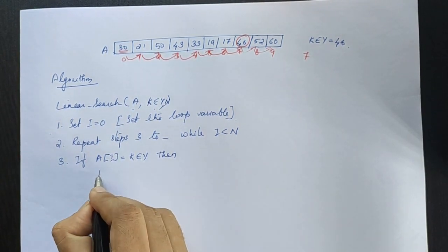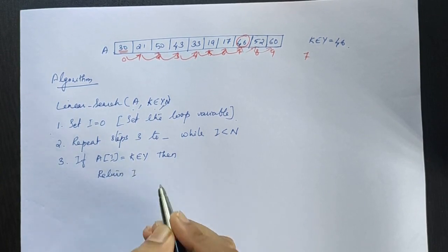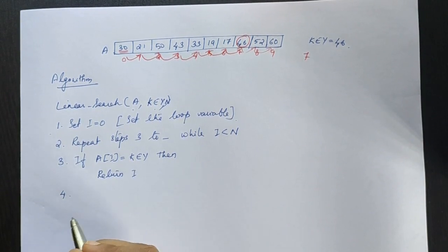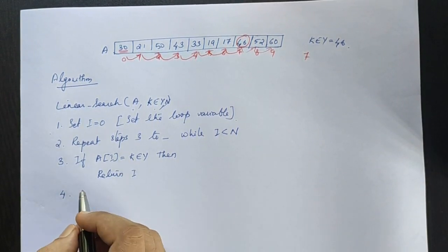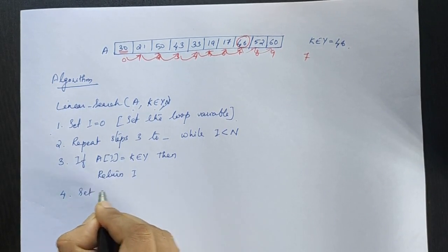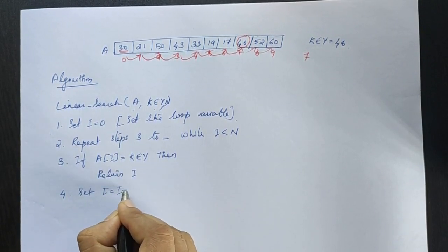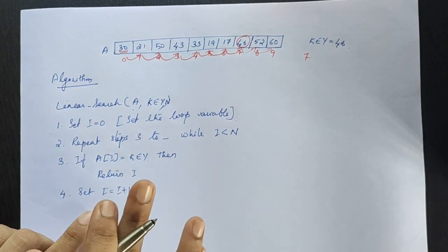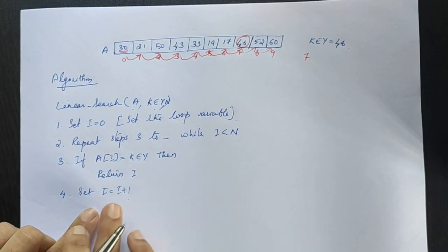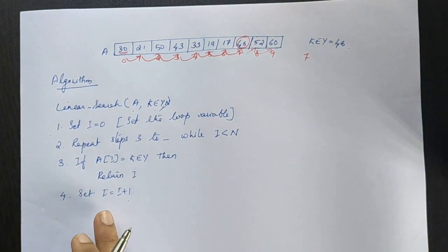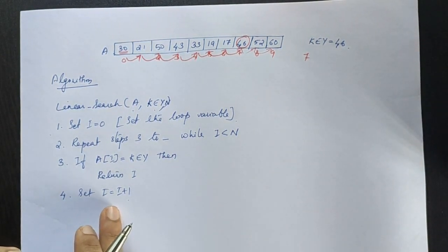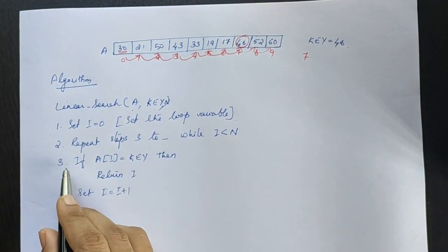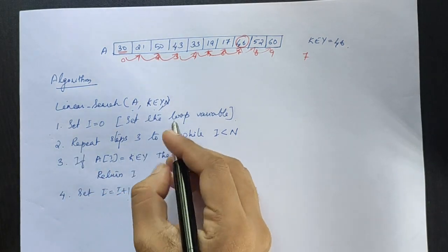If a[i] is equal to key, return i. If a[i] is not equal to key, we proceed to the next element. We increment the index: i is equal to i plus 1. Then we go to the next element and repeat steps 3 to 4.